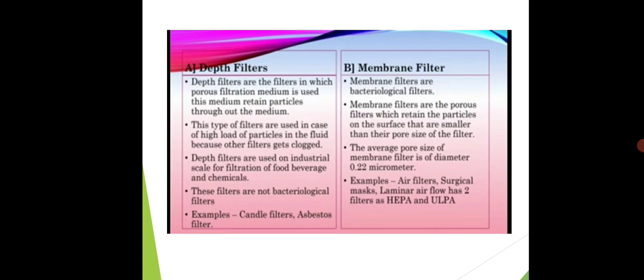Air filters are used to filter the air. A surgical mask is a type of air filter used in hospitals for surgery purposes. Its pore size is 0.22 micrometer. HEPA and ULPA are the two main types of filters used in laminar airflow and air filtration systems.